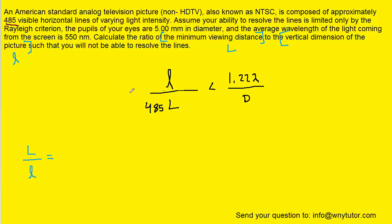Perhaps the first thing we can do is multiply both sides by 485L so it cancels on the left and ends up on the right side. We could then multiply both sides by uppercase D. We could then divide both sides by 1.22 lambda times 485 and then divide both sides by lowercase l.